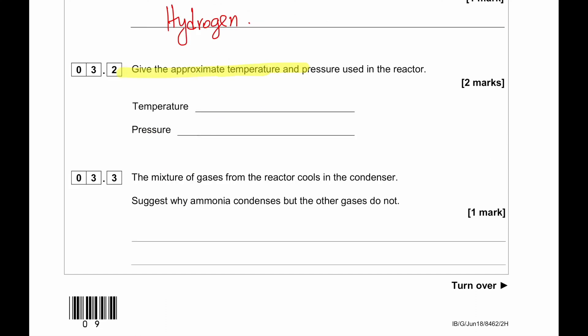Give the temperature, approximate temperature and pressure used in the reactor. The temperature of 450 degrees Celsius and 200 atmospheric pressure is commonly used.